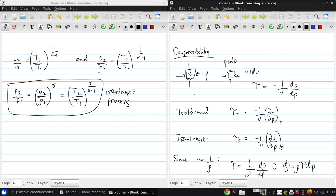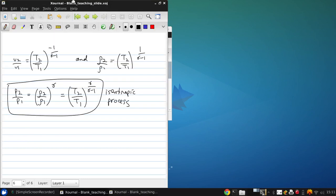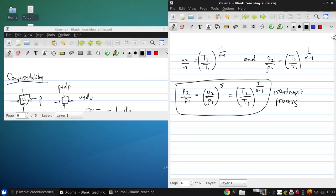So in general, gases have large values of this compressibility tau, while liquids have a small value.